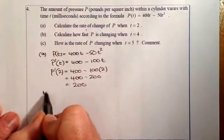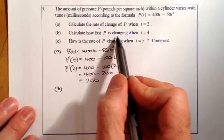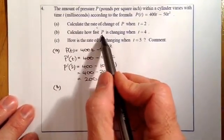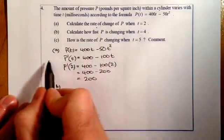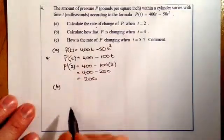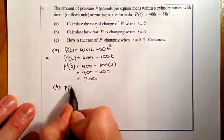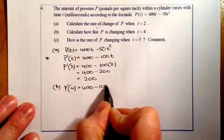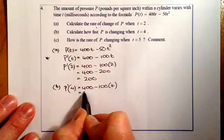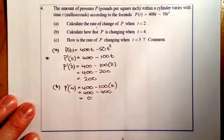Let's go for b. I have to find the same thing. How fast is P changing when t equals 4? I've already got my differentiated formula here, so I'll just use that one. P dashed 4 is 400 minus 100 times 4, which will give me 400 minus 400, which gives me 0. So it's not increasing and it's not decreasing.